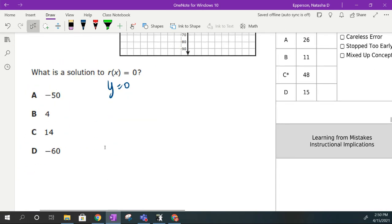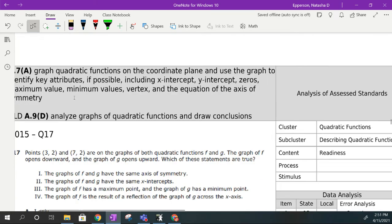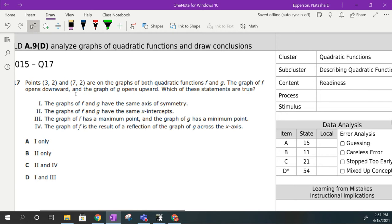Negative 6 is not one of my answer choices, but 14 is. Notice it's saying a solution. So it's not really telling me both solutions. It's saying a solution. So we're looking at one of the two solutions.